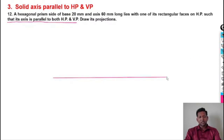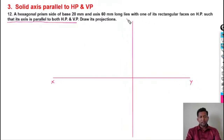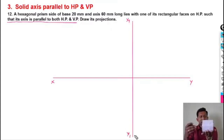First, I am going to draw the XY reference line. I am going to draw one more line perpendicular to this one, which is the X1Y1 reference line. So side view one is the true shape — that is the true shape hexagon, hexagon true shape.